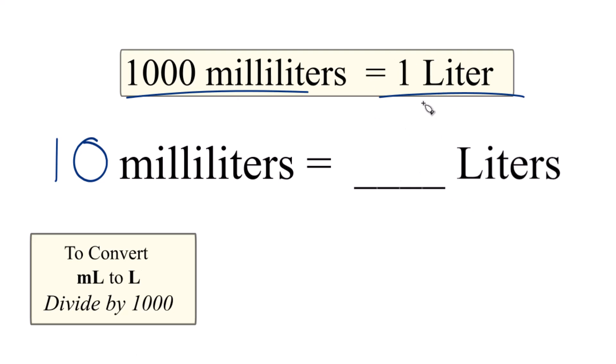...be a lot less than 1, so we'll have a decimal here. In fact, 10 is a hundred times less than a thousand, so 10 divided by a thousand gives you 0.01 liters. Let's work this out.